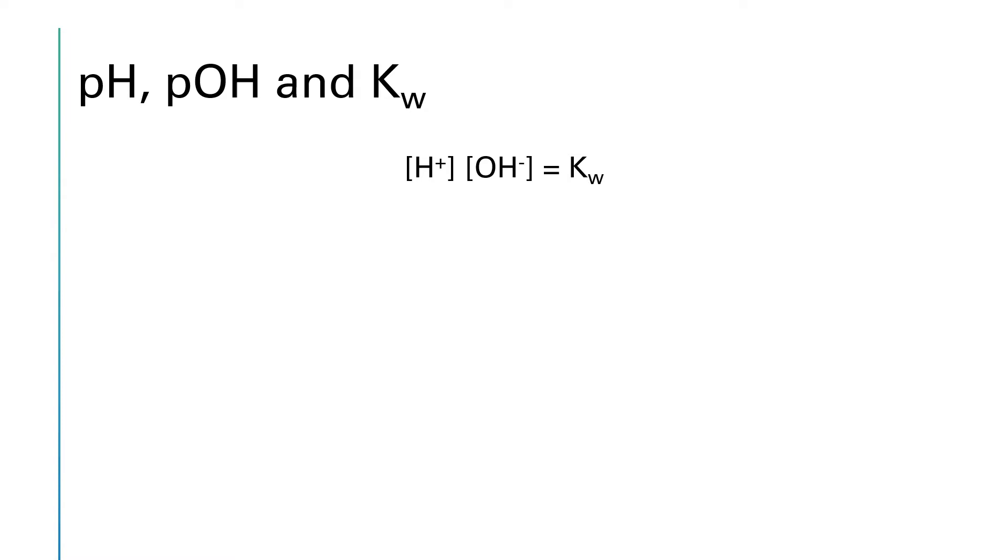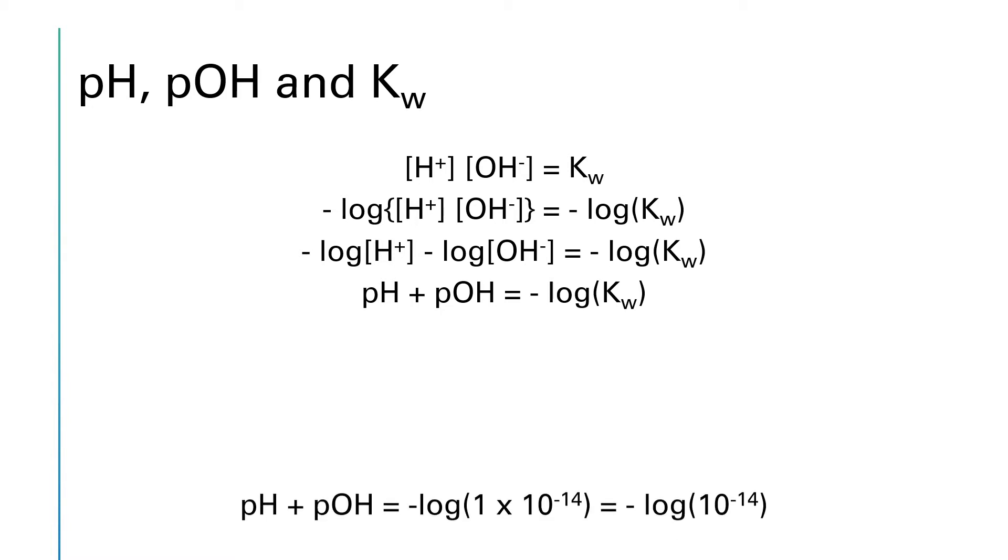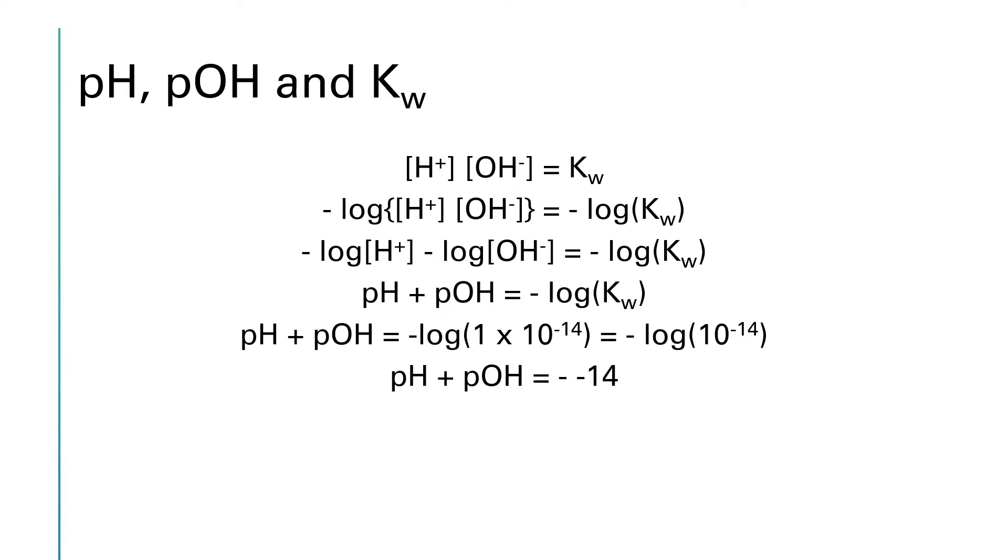I want to take minus the log of both sides of this. It is a property of logs that if you have the log of a product it's equal to the sum of the logs of the things that you were multiplying. So I can separate that out to minus the log of [H+] minus the log of [OH-] and that's all equal to minus the log of Kw. Well minus the log of H+ is pH, minus the log of OH- is pOH. And so I've got pH plus pOH in place of Kw. I'm substituting in the number and then we can evaluate that expression. And what we find is that pH plus pOH is equal to the negative of negative 14, or pH plus pOH is equal to 14.